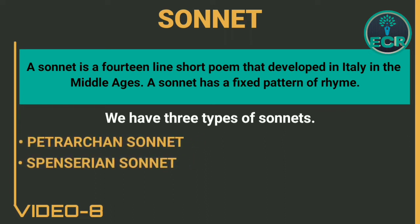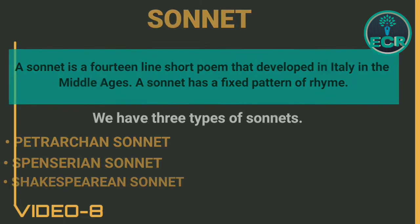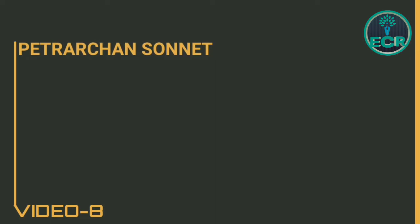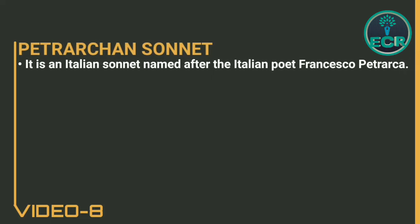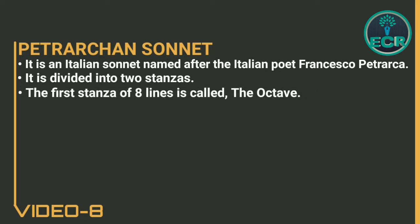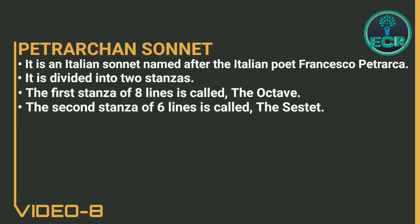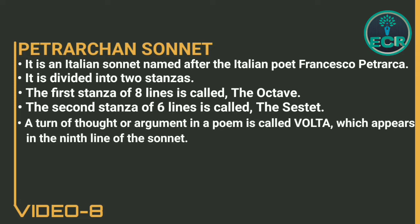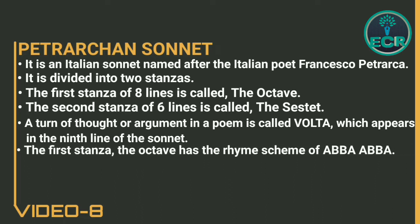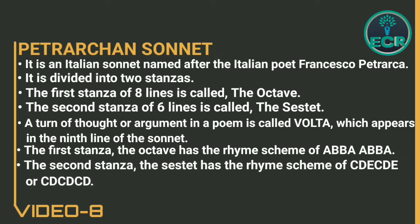First of all let us discuss the Petrarchan sonnet. It is an Italian sonnet named after the Italian poet Francisco Petrarca. It is divided into two stanzas. The first stanza of eight lines is called the octave. The second stanza of six lines is called the sestet. A turn of thought or argument in a poem is called Volta, which appears in the ninth line of the sonnet. The first stanza, the octave, has the rhyme scheme of ABBA ABBA.